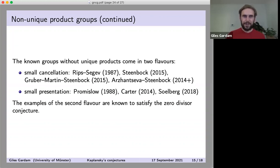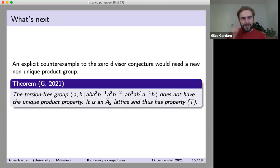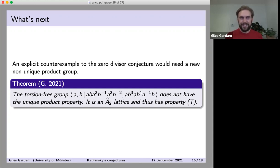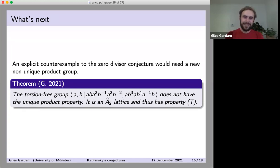The question is: what comes next? Is there any hope to disprove other Kaplansky conjectures? If we want an explicit counterexample to the zero divisor conjecture, we need new non-unique product groups, since the ones on the previous slide won't work for a direct computational approach. I can report that there's one group for which I know it doesn't have the unique product property, but for which — at least if it satisfies the zero divisor conjecture — that would be news to me. I've given the presentation; this is not the best way to think about the group, but it's something explicit with a presentation that's not too large.